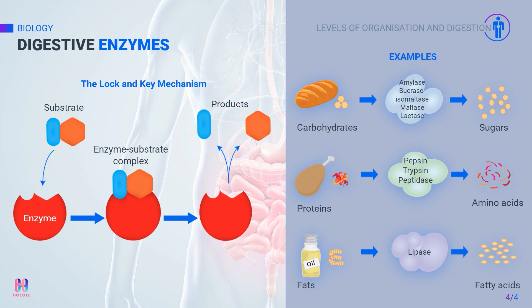Pepsin is produced in the stomach and therefore works very well in acidic conditions — pepsin has to work in the highly acidic environment of the stomach. Finally, lipases act on lipids and break them into glycerol and fatty acids; they are produced in the pancreas and stomach.